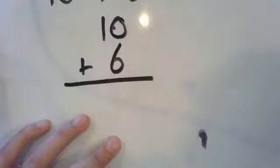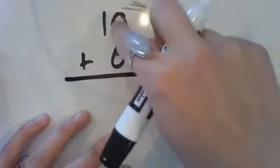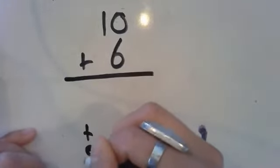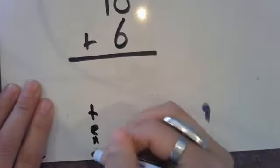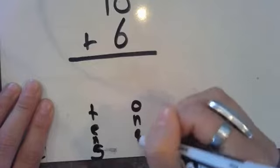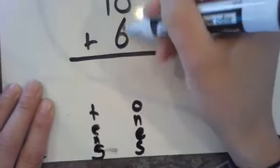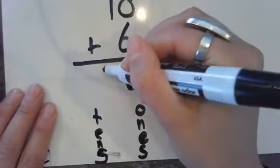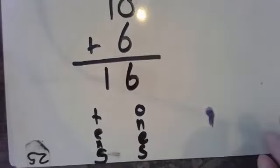Let me show you a different way. Ten plus six — we know this is the ones place value and this is the tens place value. Ones and tens. So zero plus six is six — put it in the ones place value — and one plus nothing is one, put it in the tens place value. Sixteen. Good job. Let's take a look at the next problem. Awesome.